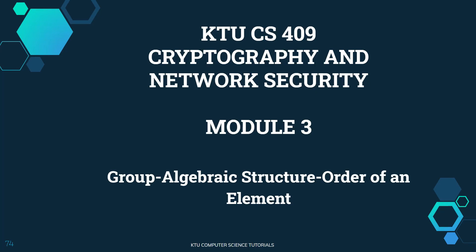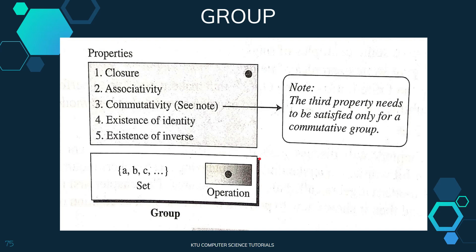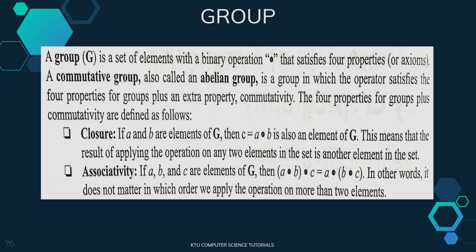Today we will be discussing an algebraic structure named group, and the order of an element in a group, which comes in module 3 of CS409 Cryptography and Network Security. A group is defined as a set of elements with a binary operation.